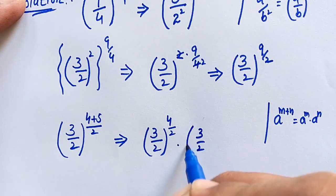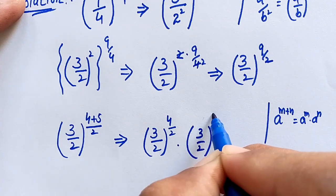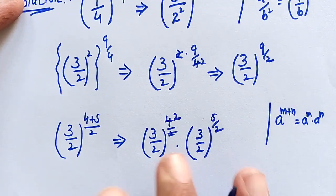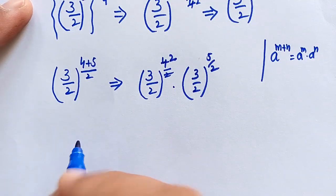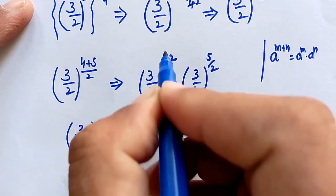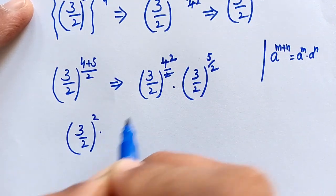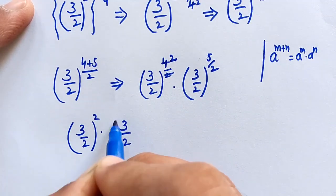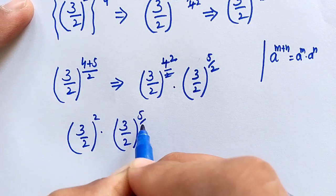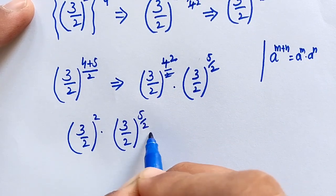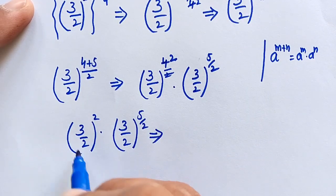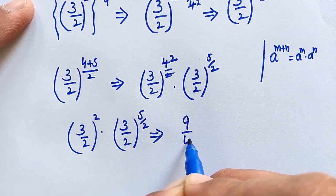Here 4/2 simplifies: 2 times 2 is 4, so (3/2)^(4/2) = (3/2)^2, which equals 3² over 2² = 9 over 4. So we have 9 over 4 times (3/2)^(5/2).